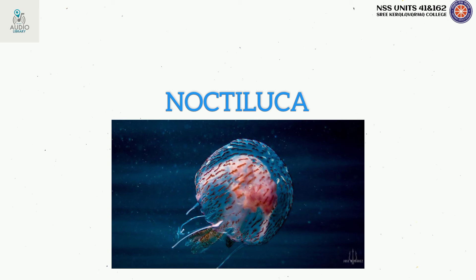Noctiluca divides mitotically to produce gametes. These divide into haploid, uniflagellate isogametes, which fuse in pairs and form diploid zygotes. The zygotes undergo multiple fission and sporulation to form zoospores. Each zoospore develops into a new Noctiluca. Rapid multiplication forms large populations, which is why we call it Red Tide.